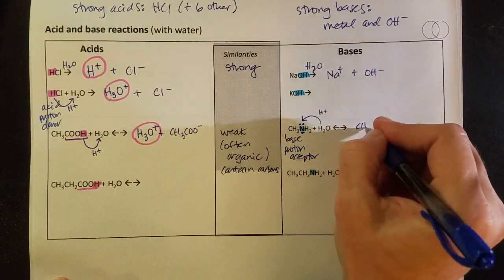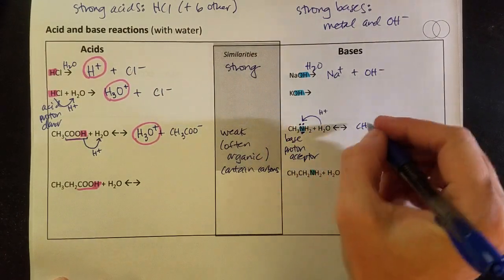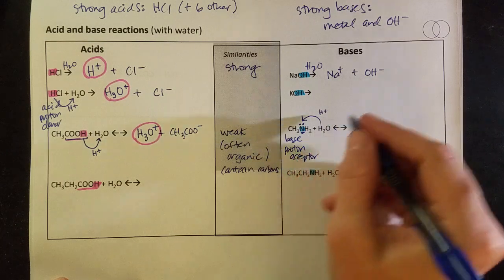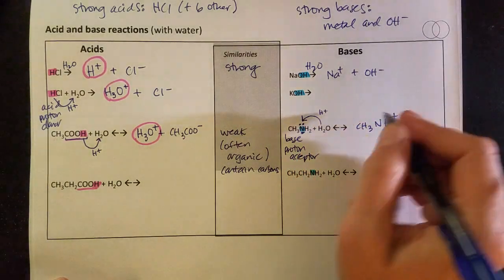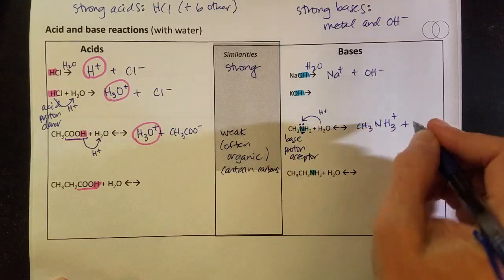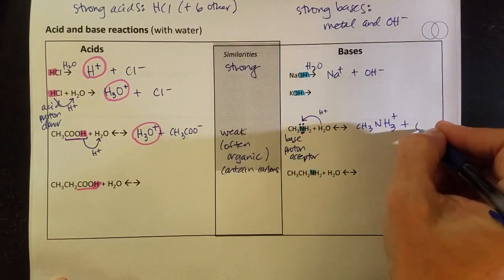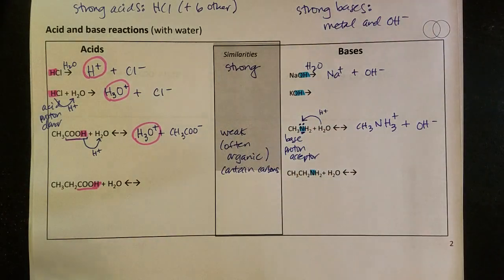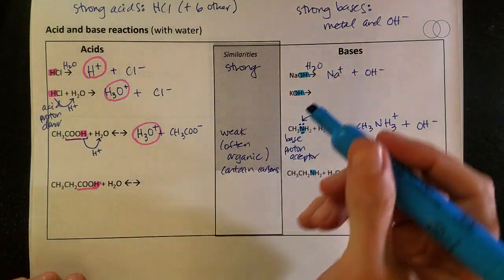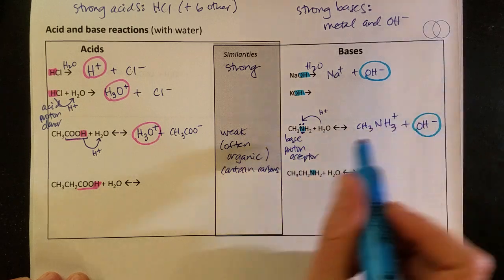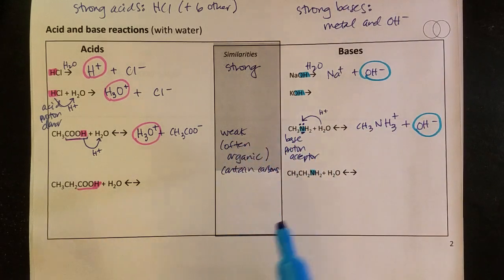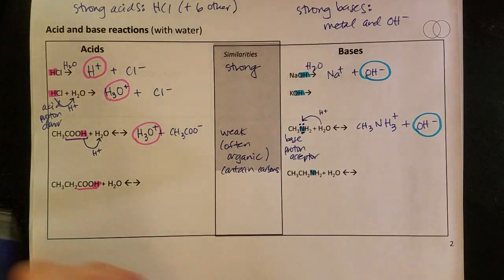So if I rewrite this, CH3 stays unchanged, but that nitrogen has picked up another hydrogen. So now it's NH3 with a positive charge because the positive moved there. What's left of the water is a hydroxide, and you can start to spot a pattern here that whether you're a strong base or a weak base with that organic carbons in it, you're always going to produce hydroxides.